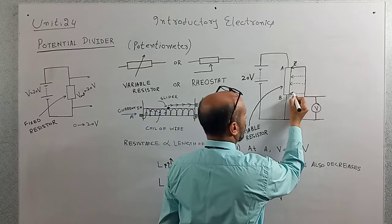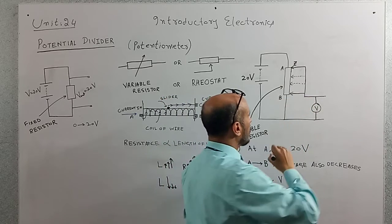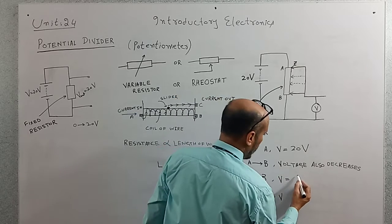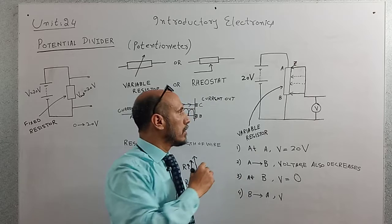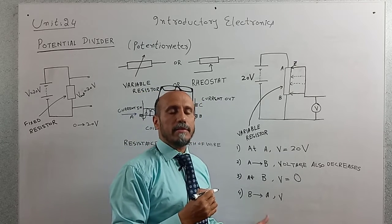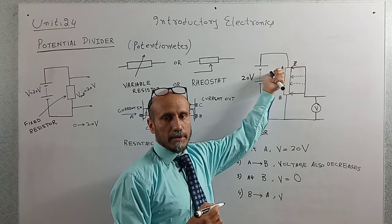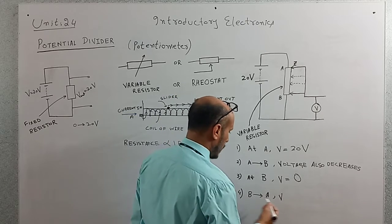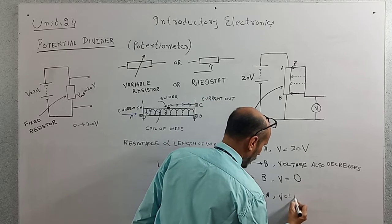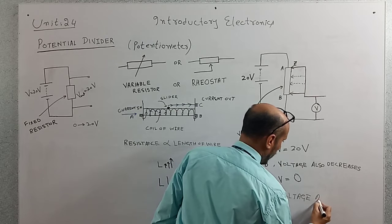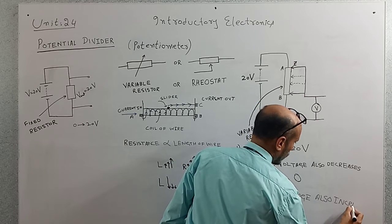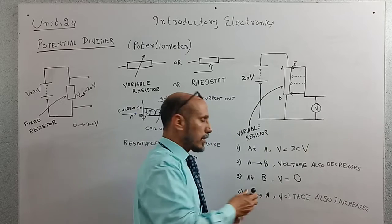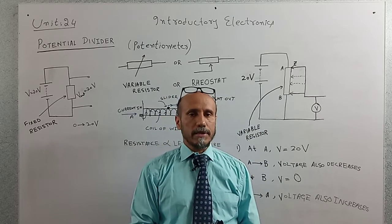When we move the slider in the reverse direction, that is from point B towards point A, the resistance increases and the voltage across the resistance also increases. So as the slider moves from B back to A, the voltage increases. This is how the potential divider works.